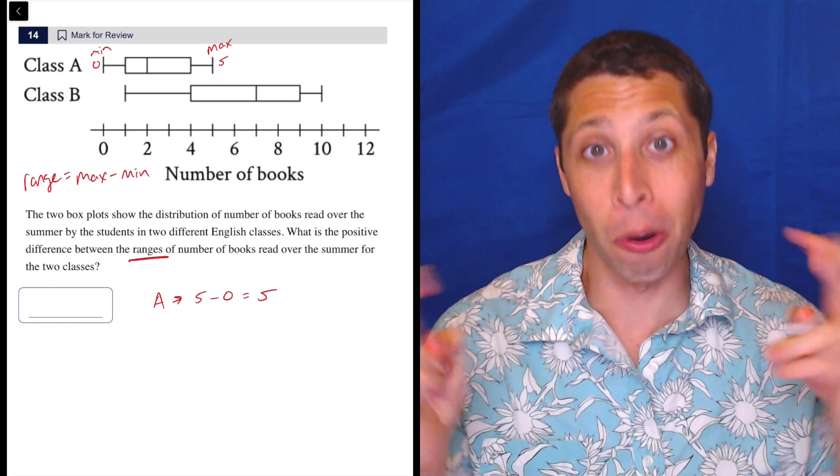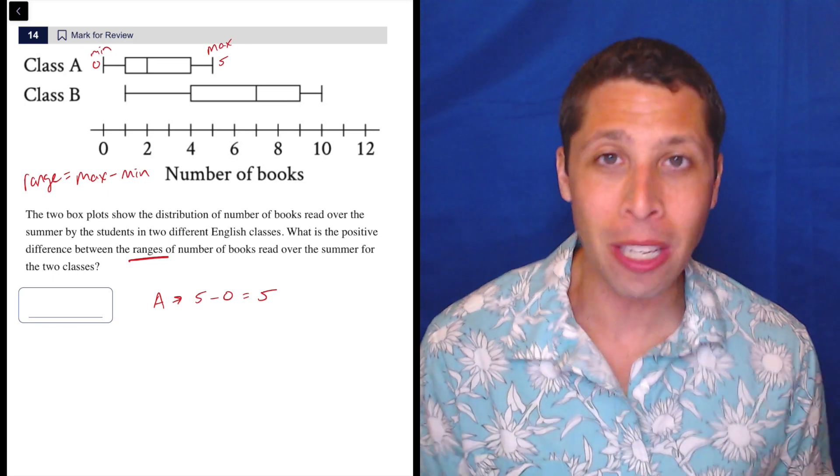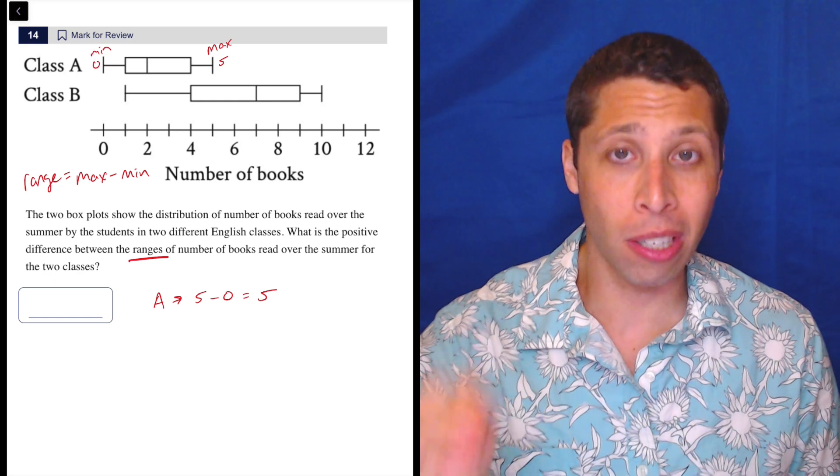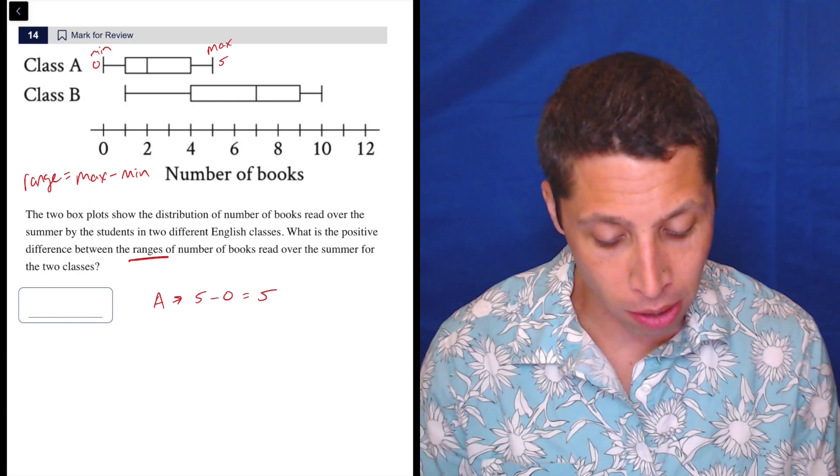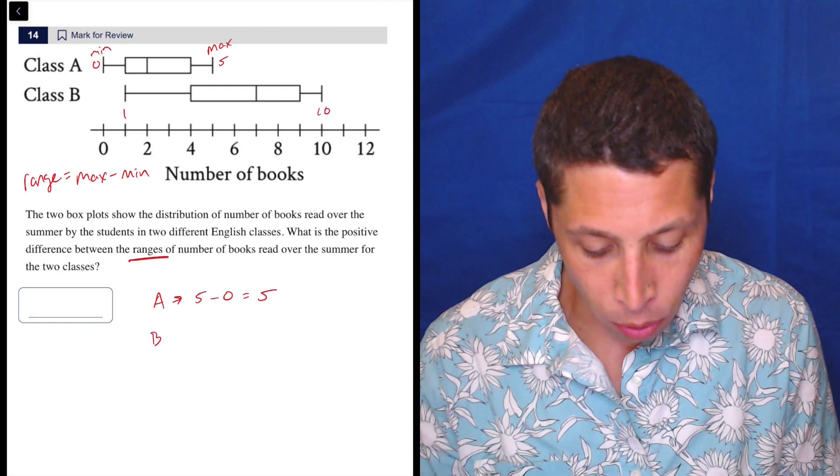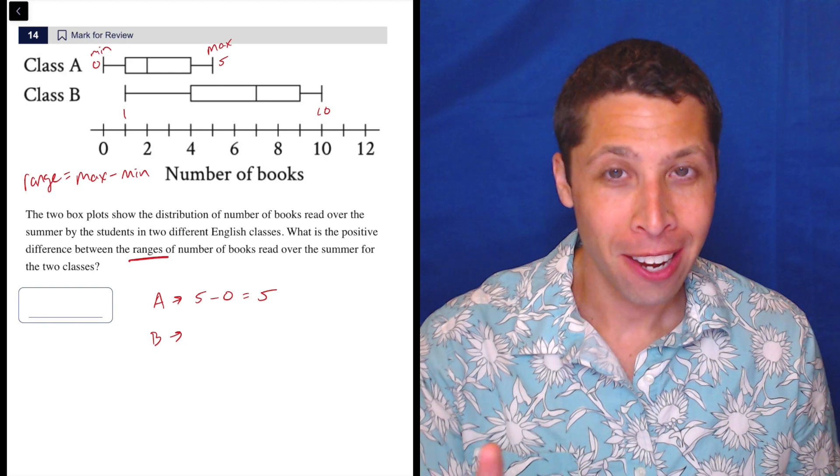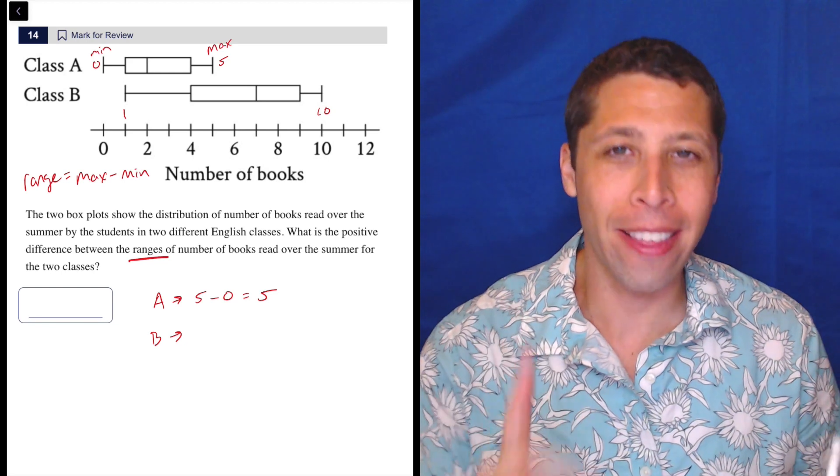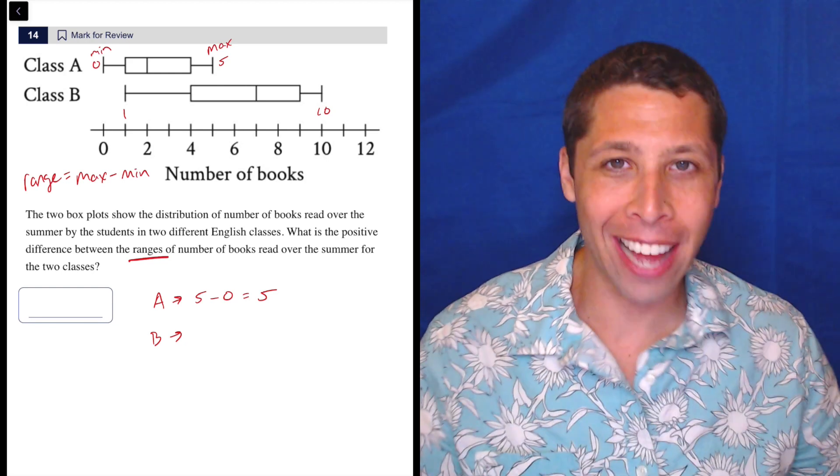So with box plots, we're looking just at those whiskers then. So 5 minus 0, and then let's do it for B. That's gonna be 10 and 1, so that I think is where people are gonna make mistake. You're gonna think 10 and 1 and you're gonna go, that's 10 because 1 to 10. That's 10.